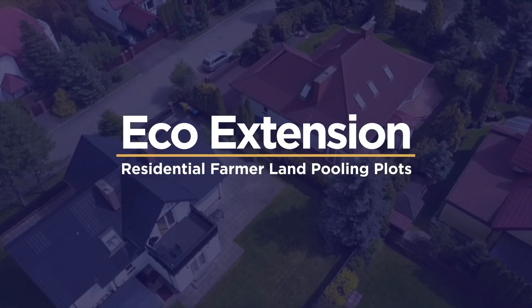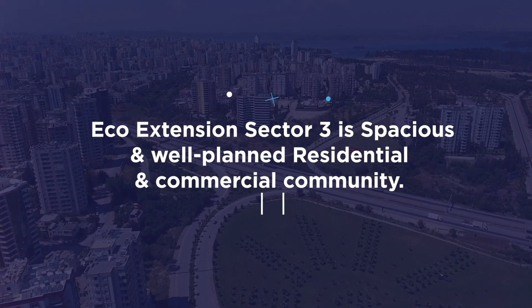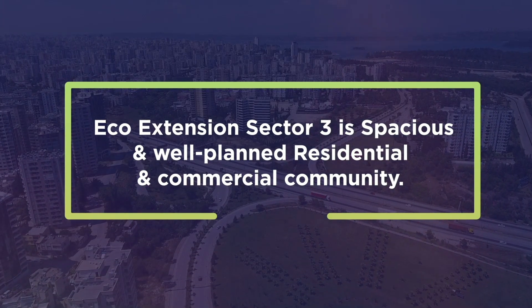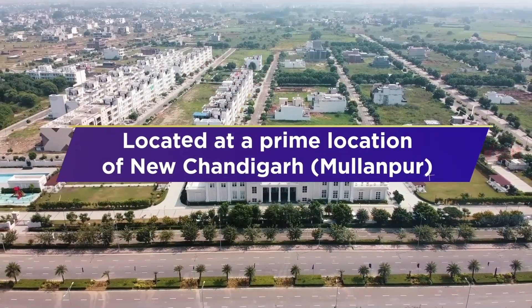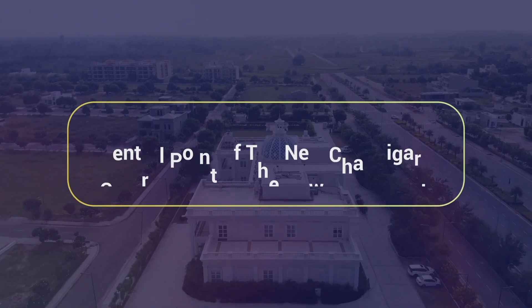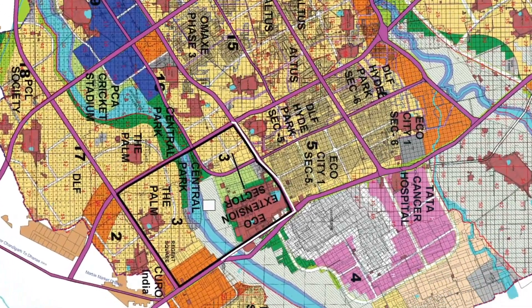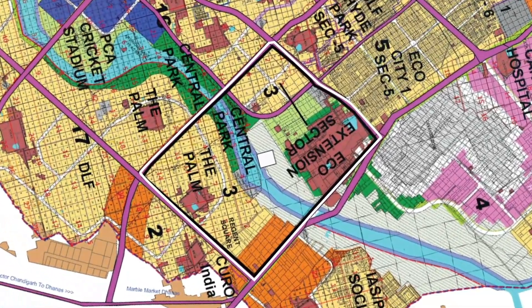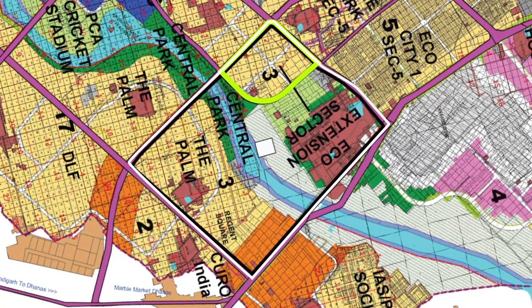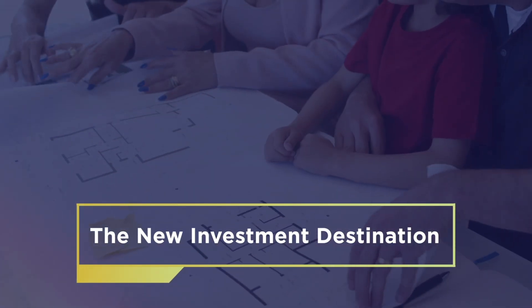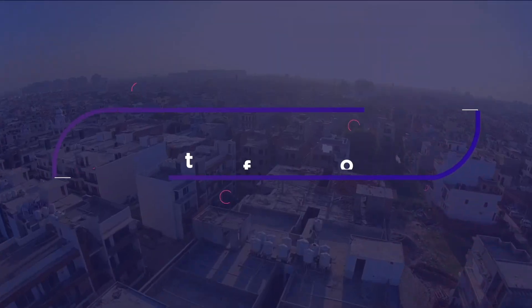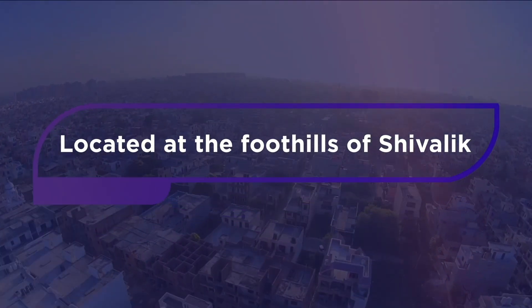Eco-Extension Residential Farmer Land Pooling Plots — Eco-Extension Sector 3 is a spacious and well-planned residential and commercial community located at a prime location of New Chandigarh, Mullapur, which is the central point of the New Chandigarh Master Plan, marking it as the new investment destination. Eco-Extension is here to transform the arena, located at the foothills of Shivalik.